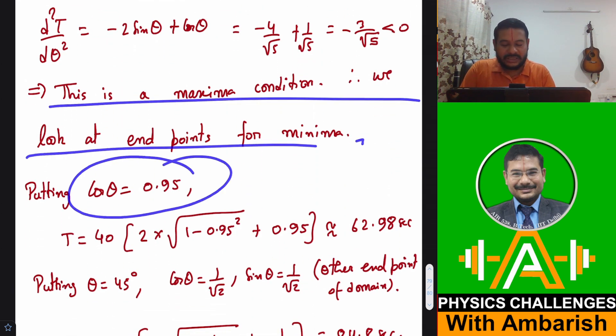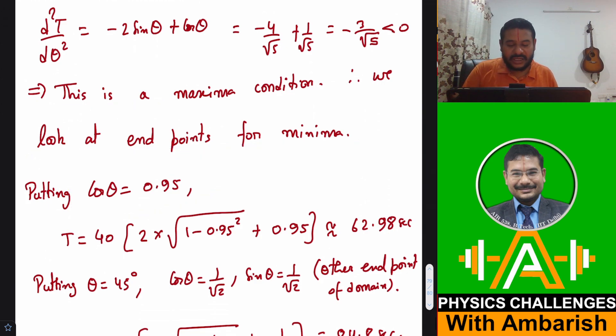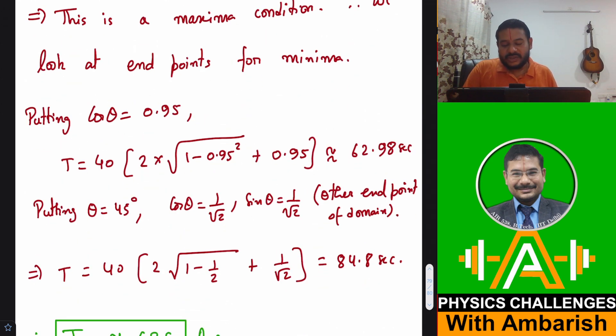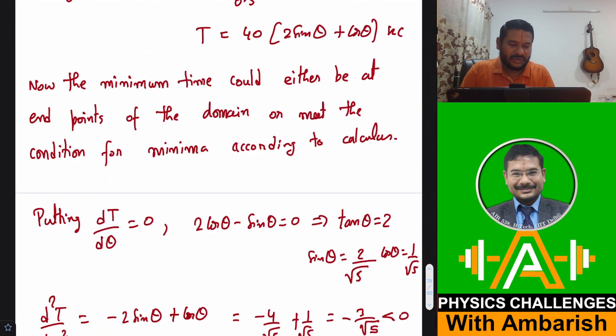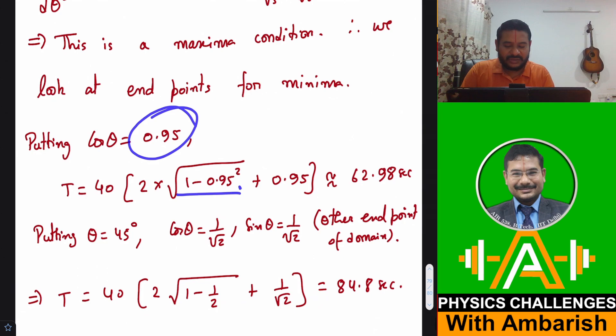One of the end points you see was cos θ being 0.95. So if cos θ is 0.95, sin θ is under root of 1 minus cos square θ. So 1 minus 0.95 square. If you calculate this time, this comes out to be 62.98 seconds. So that is the one end point value.